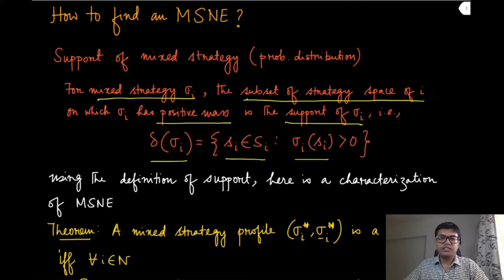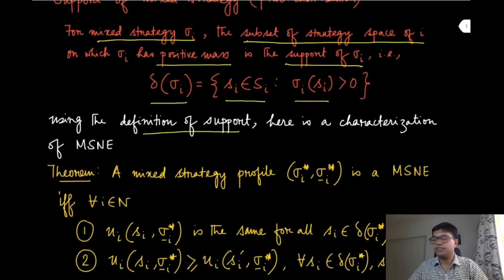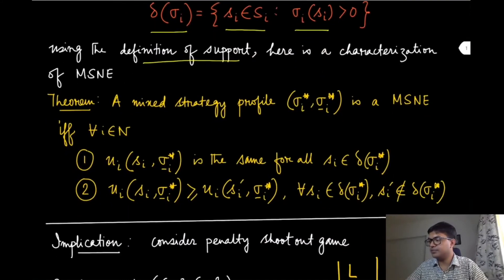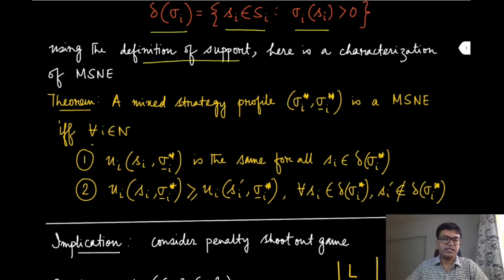Using this definition of support, we are now in a position to state the characterization theorem. A characterization theorem gives a necessary and sufficient condition for the mixed strategy Nash equilibrium. The result states that a mixed strategy profile (sigma_i*, sigma_{-i}*) is a mixed strategy Nash equilibrium if and only if, for every player i in the set of players N, two conditions hold.